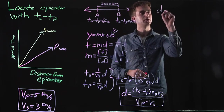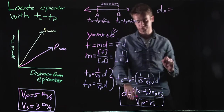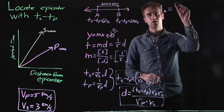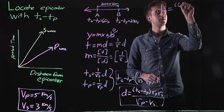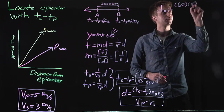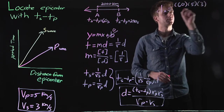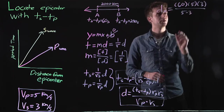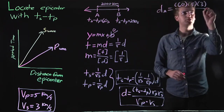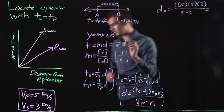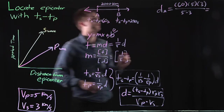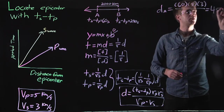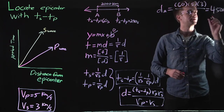So dA equals — using our equation — 60 seconds times 5 km/s times 3 km/s, divided by 5 minus 3. This gives us 450 km.